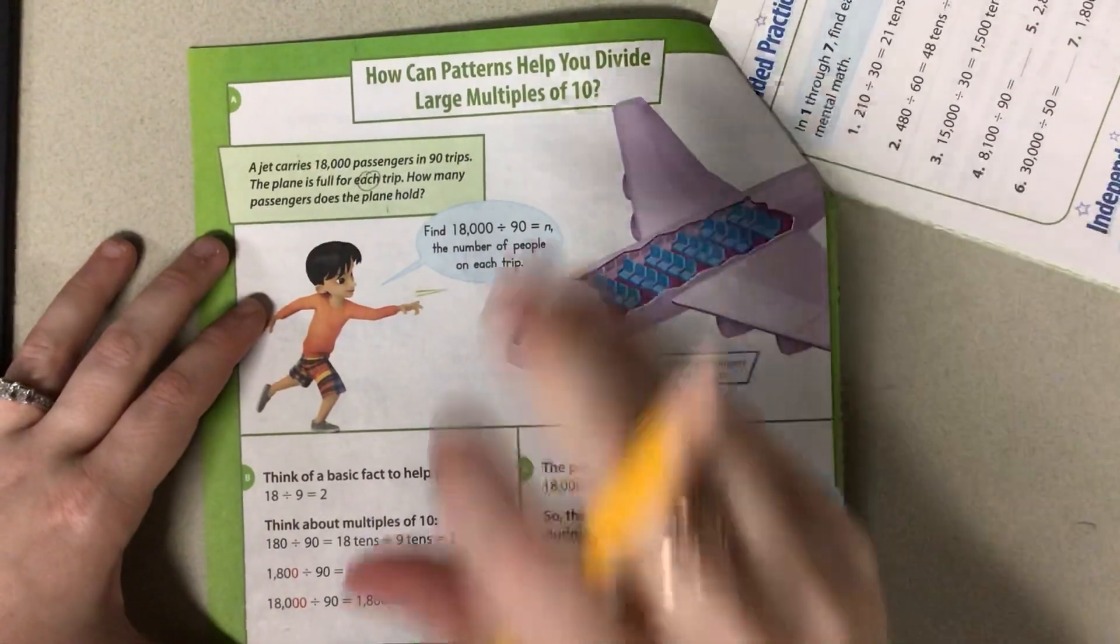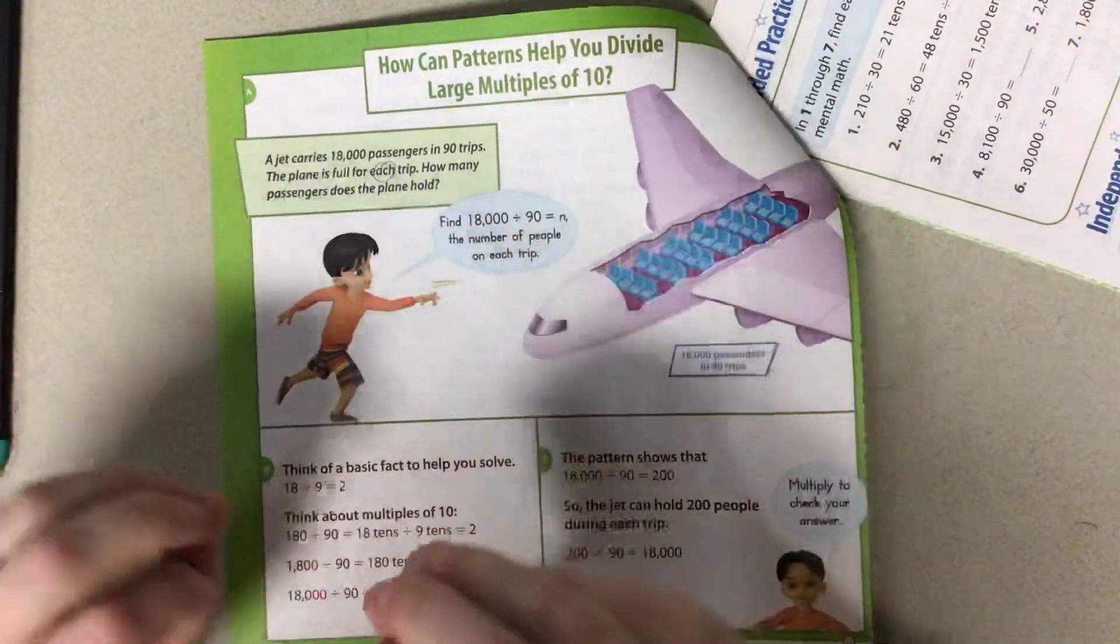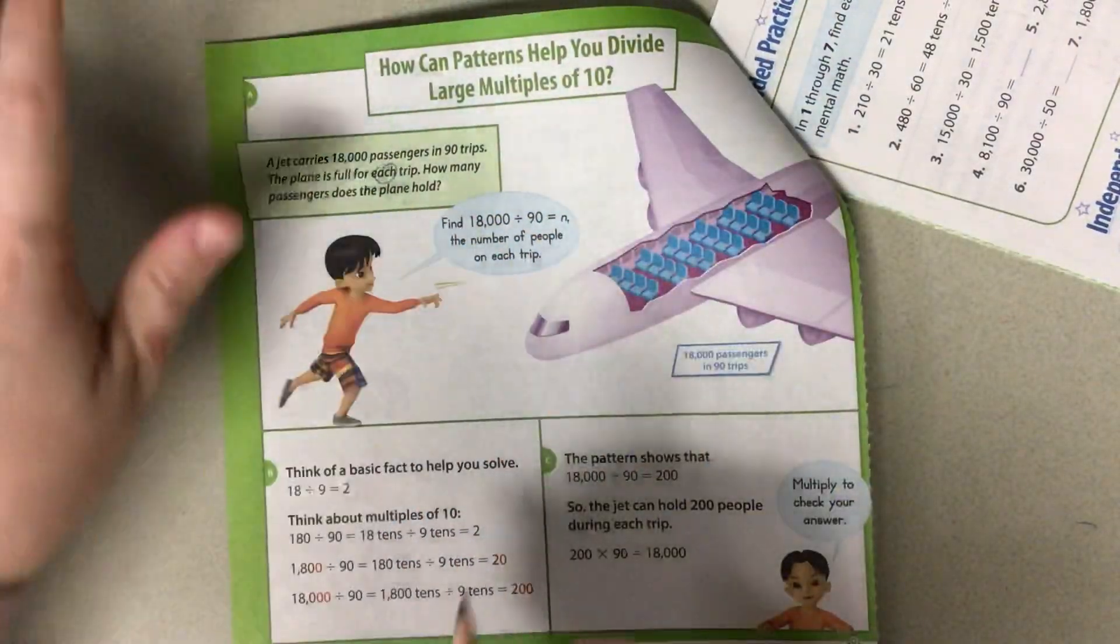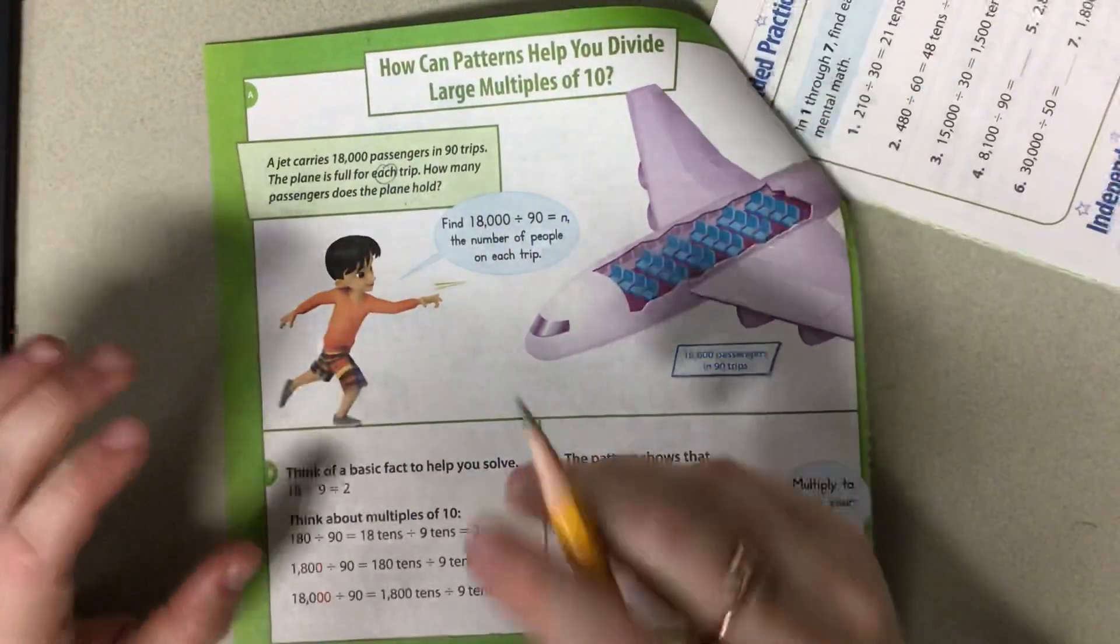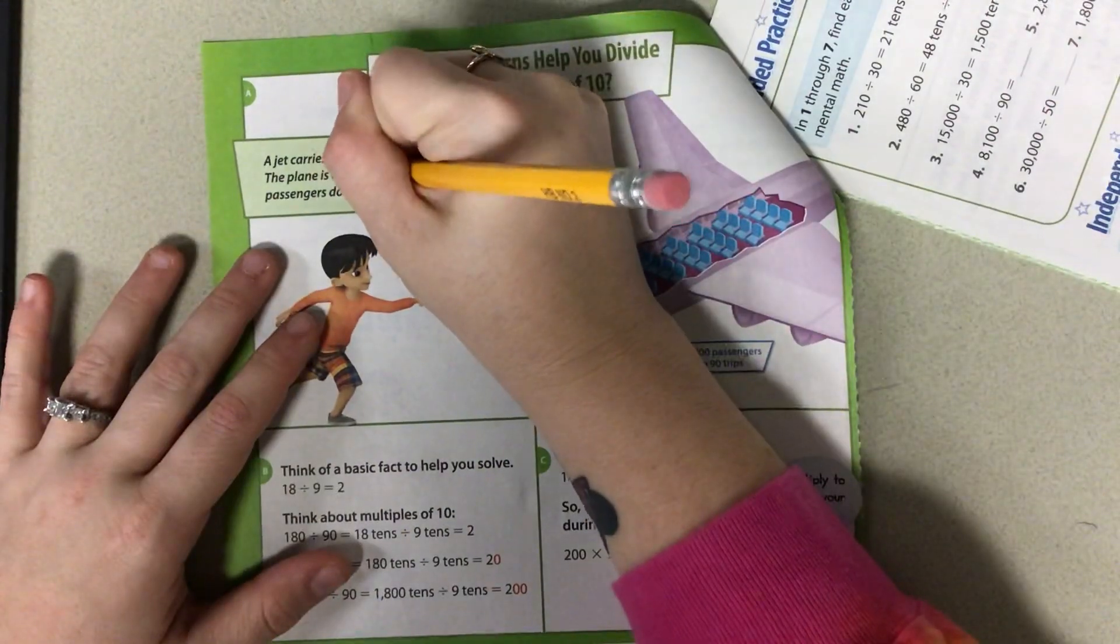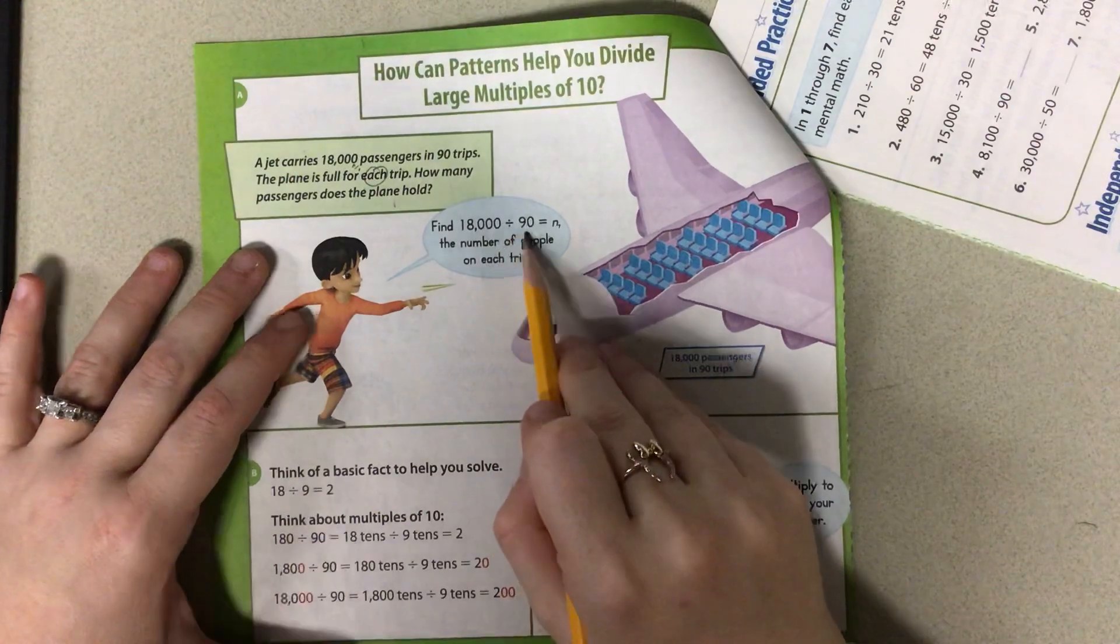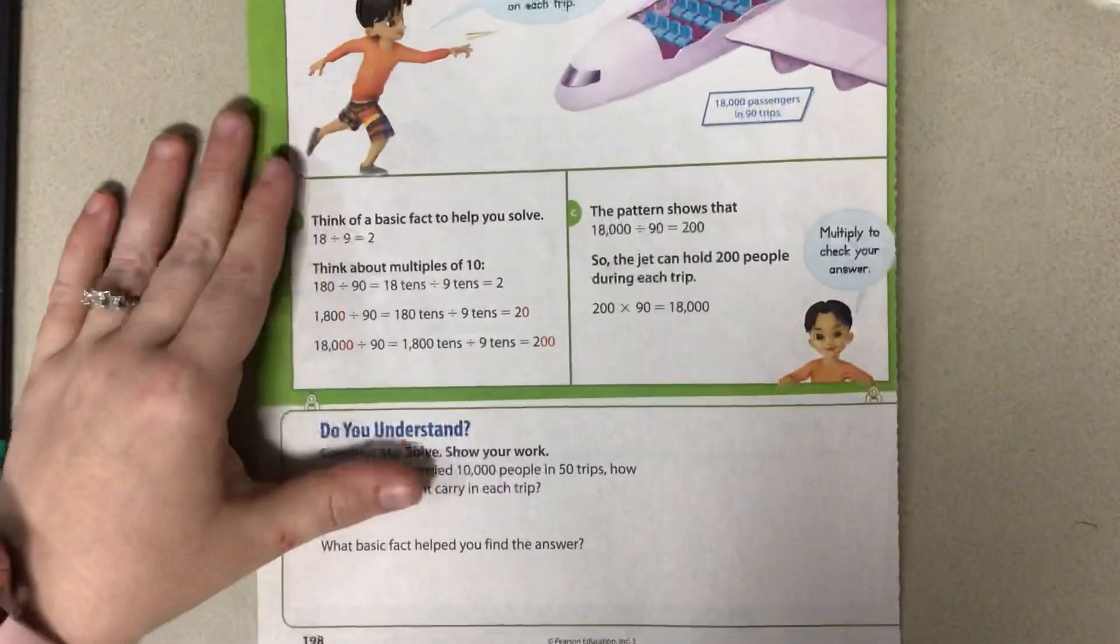Again, we have each, but we are putting passengers into planes. So we're moving them into it. I like to use my hands and think about am I putting things into something or am I grabbing a bunch of stuff and putting it together? In this case, I'm putting people into trips, so therefore I am dividing. It gives you the example here. It says 18,000 divided by 90 equals N. So let's see how they solved it.